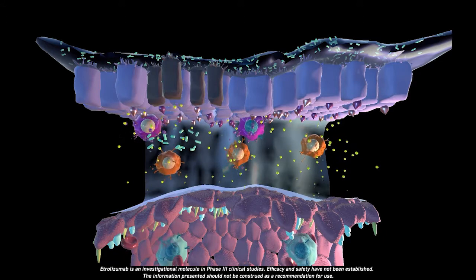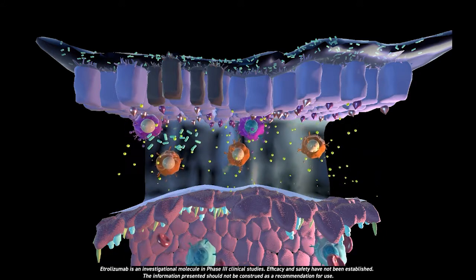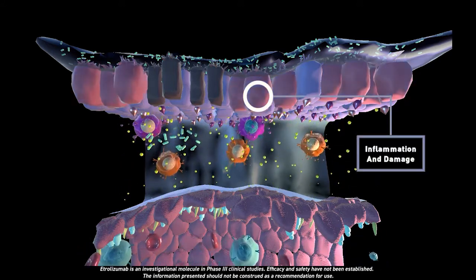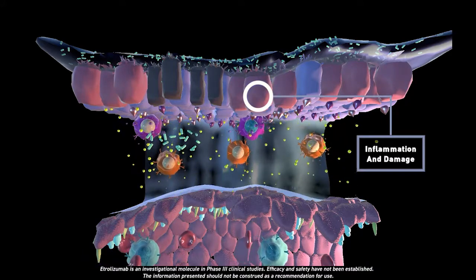As a consequence, these immune cells are retained within the lamina propria, where they continue to secrete cytokines, which promotes inflammation and damage to nearby gut cells.